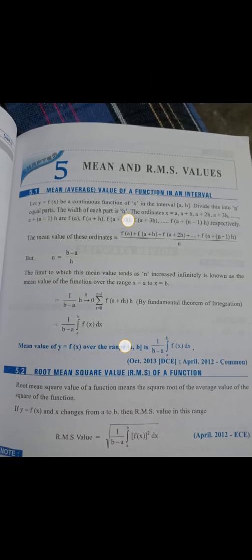The RMS value (root mean square value) formula is: √{ 1/(b−a) · ∫[a to b] [f(x)]² dx }. For C20 students, mean value and mean square value carry 3 marks each, and RMS value carries 8 marks.